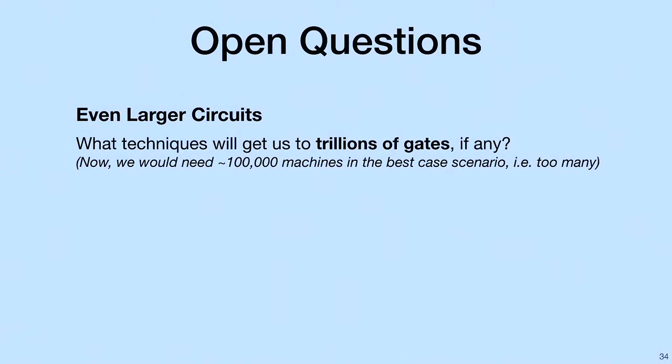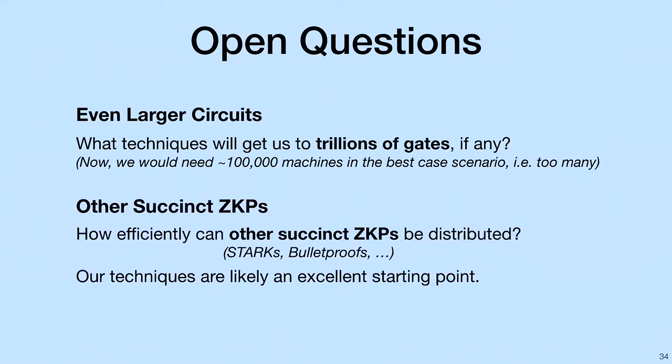Lastly, I'd like to leave you with two open questions. The first open question is, what techniques will get us to trillions of gates, if any? With this current approach, we would need roughly 100,000 machines in the best case scenario. And frankly, that's too many. The second question is, how efficiently can other succinct zero-knowledge proofs be distributed? Things like Starks and Bulletproofs. It seems like our techniques would be an excellent starting point for this. And so with that, I'd like to conclude. Thank you for your attention.